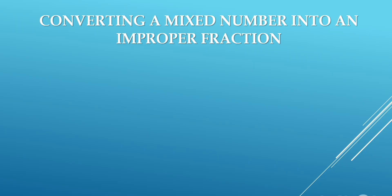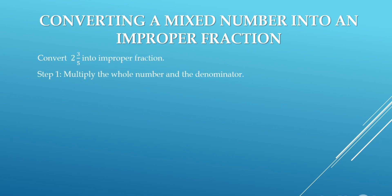Converting a mixed number into an improper fraction. Let's take an example: convert 2 whole 3 upon 5 into an improper fraction. Step 1: multiply the whole number and the denominator. Whole number is 2 and the denominator is 5, so 2 multiplied by 5 equals 10. Step 2: add the numerator to the product. Product is 10 and numerator is 3, so 10 plus 3 equals 13.